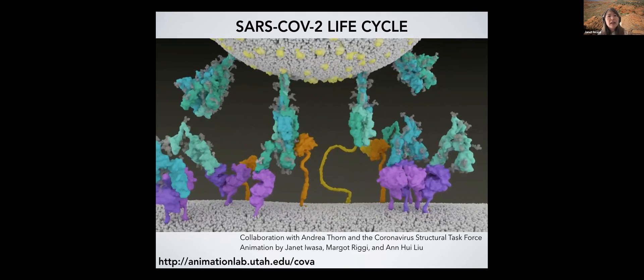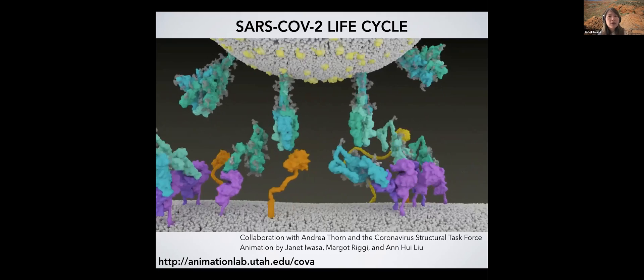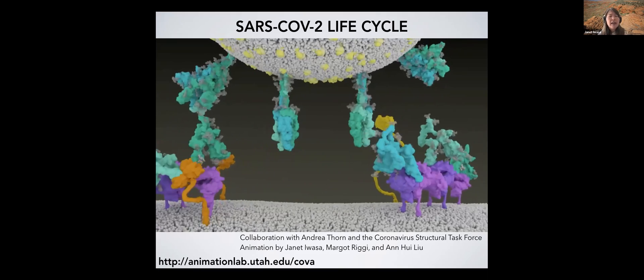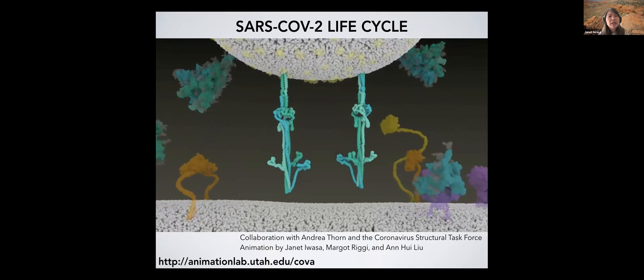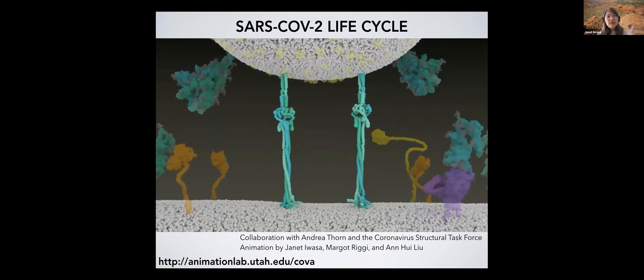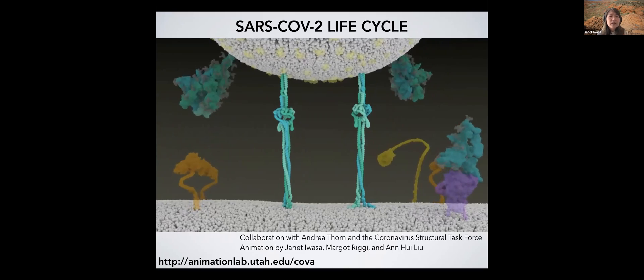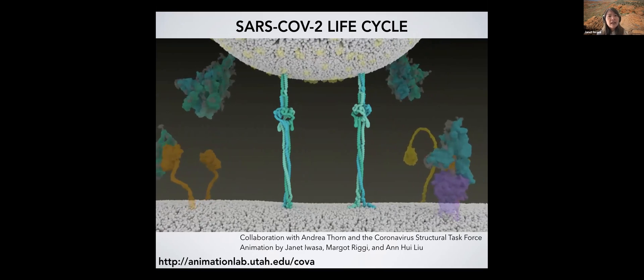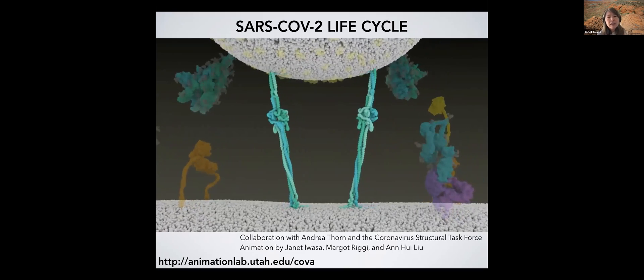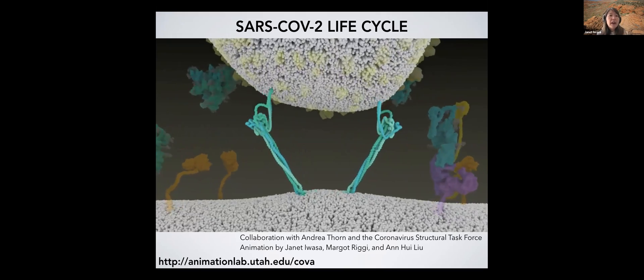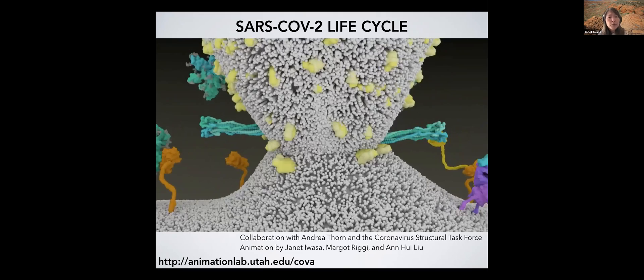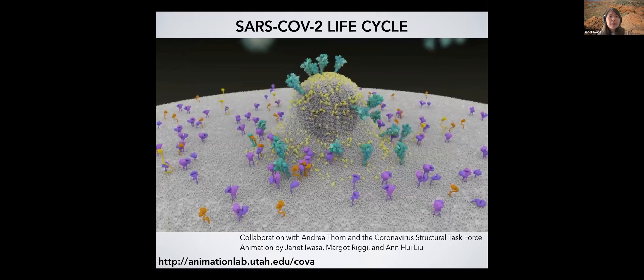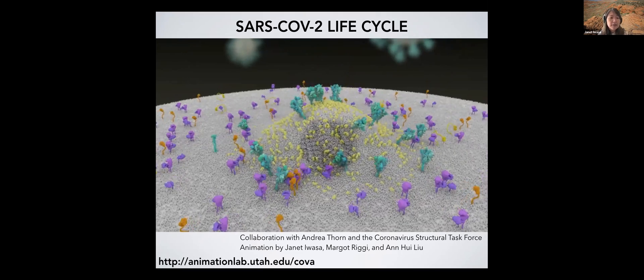Proteases called Tempris2 then kind of cut away parts of the spike protein, and they kind of fall away. And that allows the spike protein to undergo a series of conformational changes. So the first one, it kind of acts like a harpoon. It injects itself into the membrane of the cell, and then it folds back on itself, which really allows the membrane of the virus to fuse with the membrane of the cell. At this point, basically the nucleocapsid, the RNA genome, is able to enter the cell.